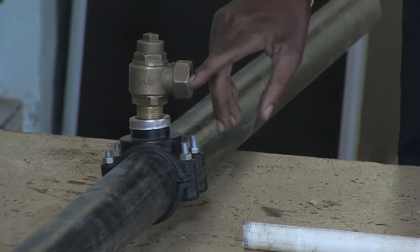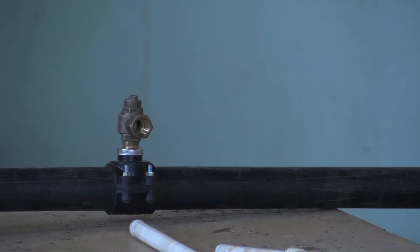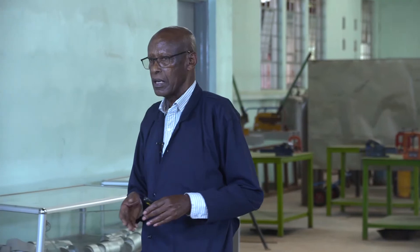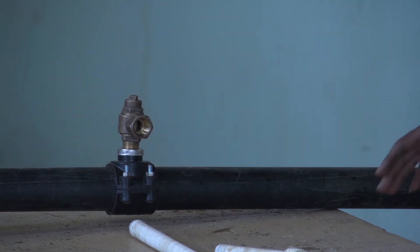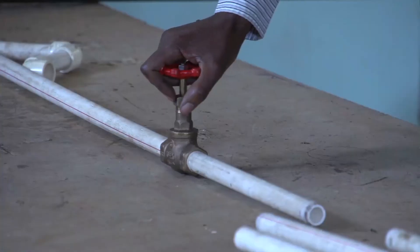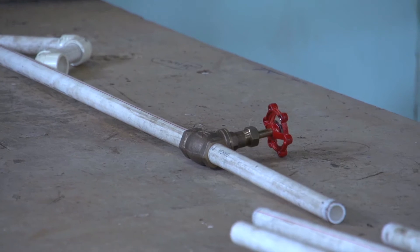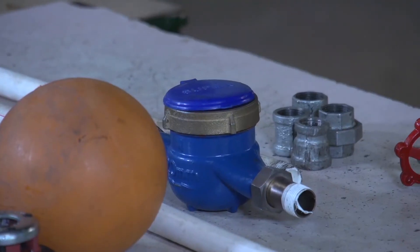When getting a new connection to your house, a branch is tapped from the water main leading to your property. The pipe connecting from the ferrule is called the communication pipe. It goes up to the water meter position. Beyond the meter, that is where the owner of the house starts their own work.